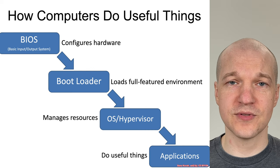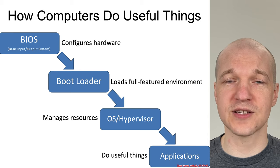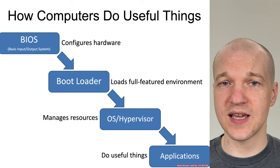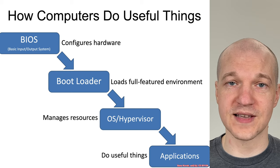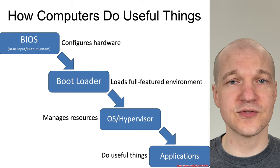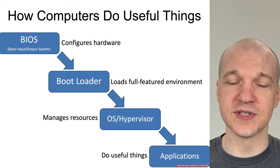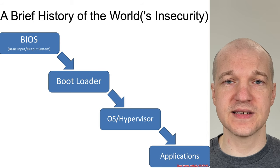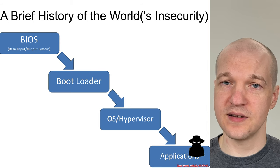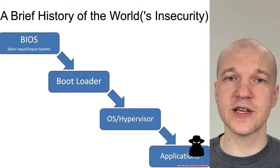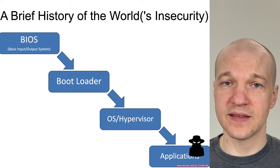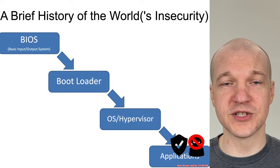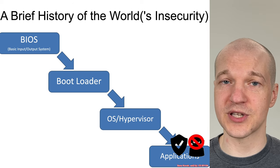The OS or hypervisor is going to load things like applications, which do the actual useful things — the databases, the word processors. The history of attacks is that attackers started creating malicious software at the application level, and defenders started creating defensive software which would catch the malicious software at the application level.